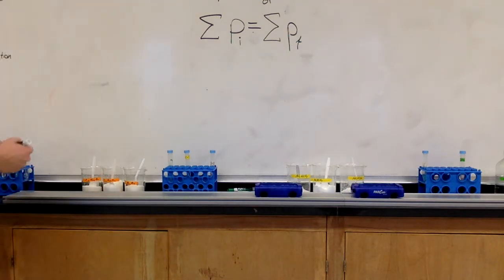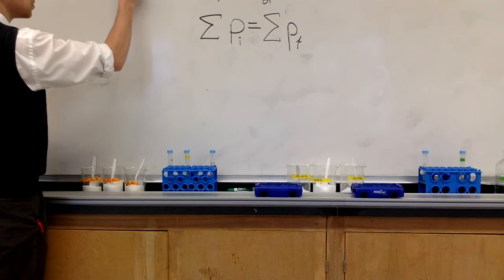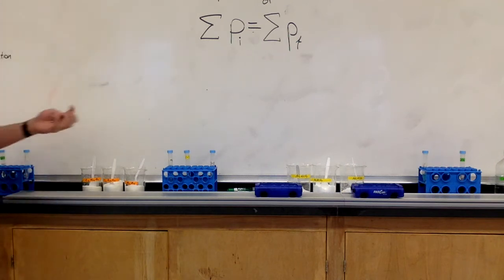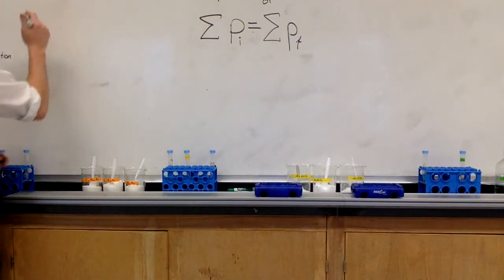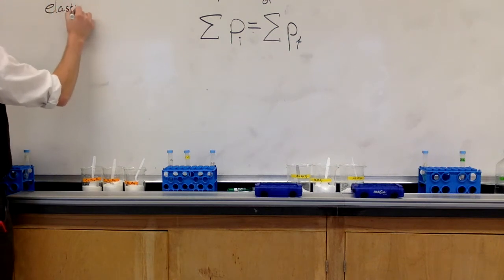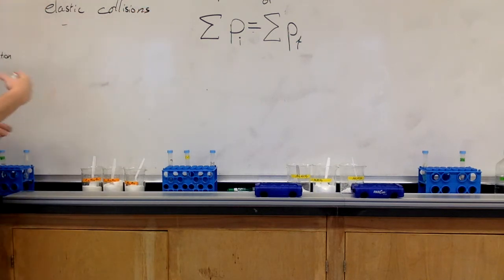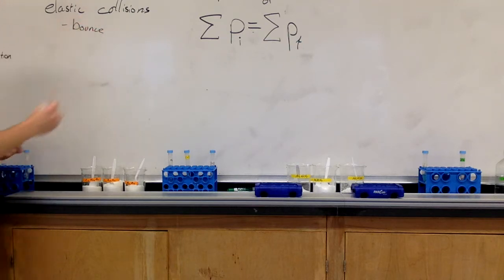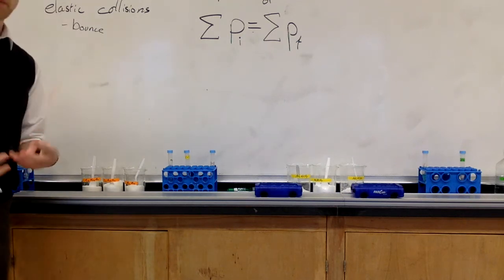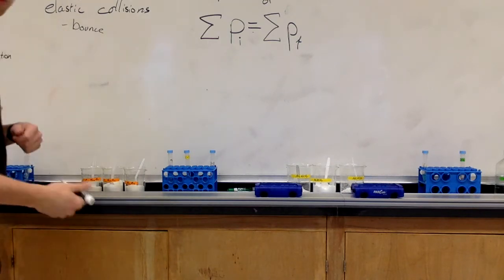We're going to keep this in mind as we watch these collisions occur. There are a couple of different kinds of collisions. There are elastic collisions, where two things hit each other. In elastic collisions, the two objects that are colliding bounce off of one another. They hit, they collide, there's a transfer of momentum, there's some change in momentum, but those objects don't stick together — they bounce off. Think of billiard balls: if you're playing pool, all of those collisions are going to be elastic.